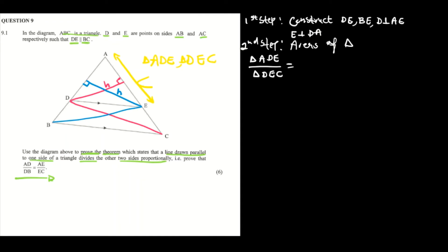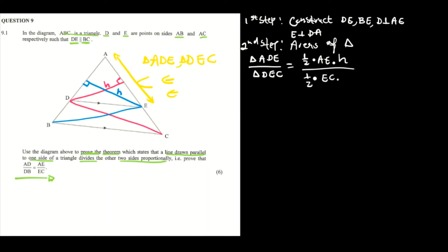The area of triangle ADE is one-half times base AE times perpendicular height H. The area of triangle DEC is one-half times base EC times the same perpendicular height H, since they share it. The halves and H cancel out, leaving us with AE over EC.